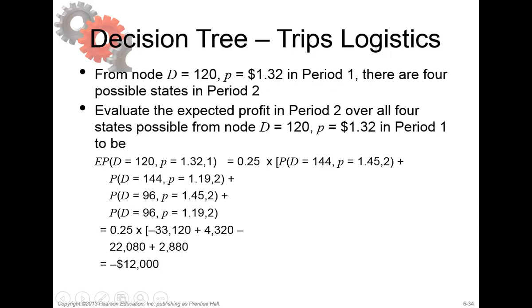Let's go again to our calculation. From the node demand 120 and spot price 1.32 in period 1, there are 4 possible states in period 2. We evaluate now what the possibilities are. Here you see our first result, our second result, third result and fourth result. We add them all up, and we do it times 0.25. It's times 0.25 because 1 divided by 4 is 0.25 - four are the possible options.